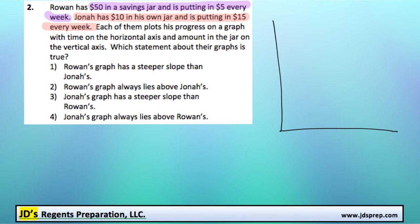So right off the bat, I'll do purple for Rowan. Rowan has $50 in his savings jar. Let's say $50 might be around here. And he's putting in $5 every week, so that's going to be kind of a bit of a gradual slope like this.